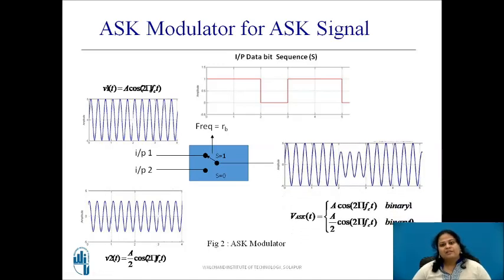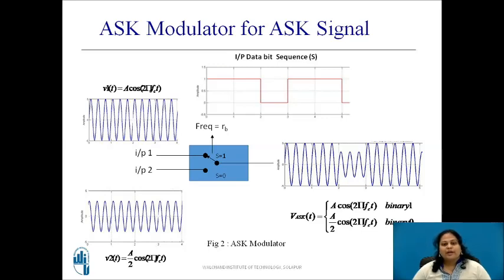Thus, you can see the resultant output ASK modulated signal as shown in the figure. When the input bit is 1, the switch is connected to input 1 and the output during that bit slot is the carrier with the larger amplitude. When the input bit is 0, the switch is connected to input 2 and the output is the carrier with the smaller amplitude. Thus, the ASK signal can be represented as V_ASK(t) = A·cos(2π·fc·t) or (A/2)·cos(2π·fc·t) if the input is logic 1 or 0 respectively.